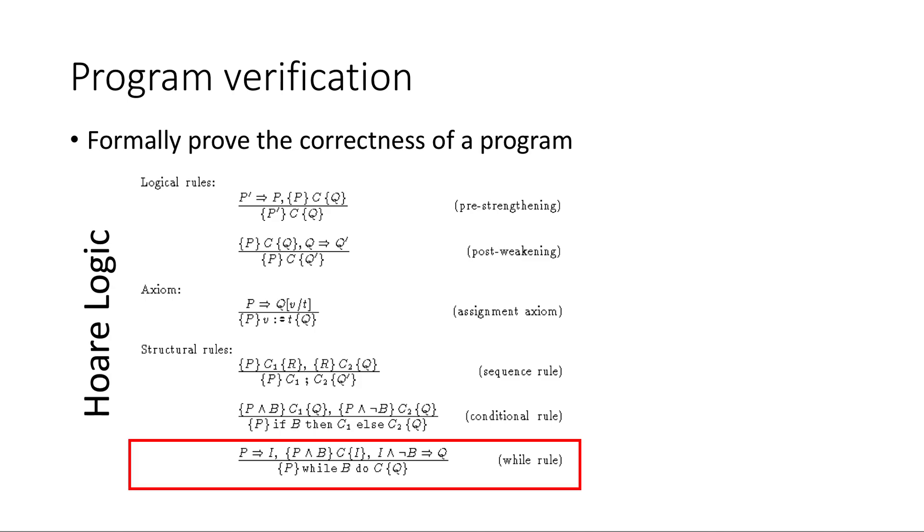However, the while rule requires something called loop invariant, and finding a loop invariant for a given program is an undecidable problem.